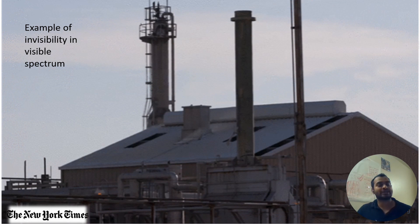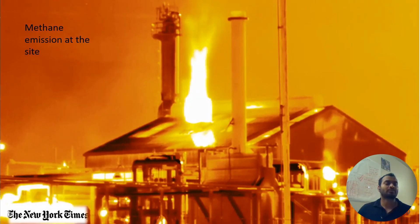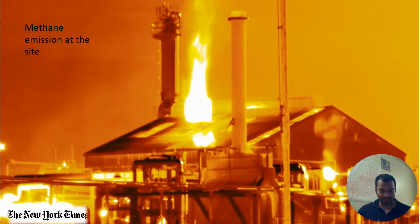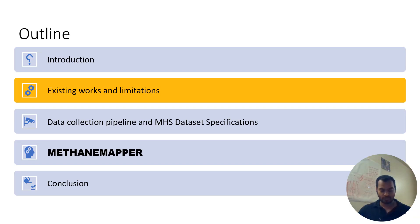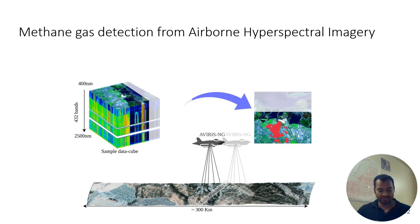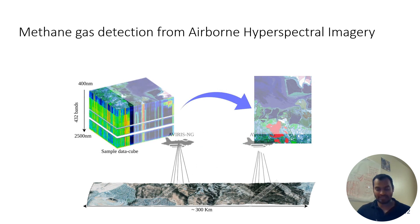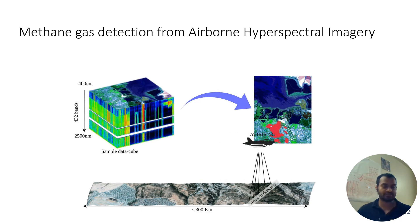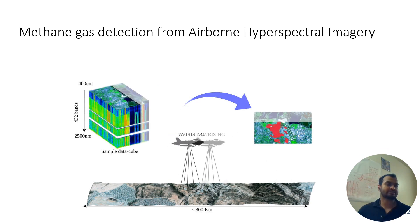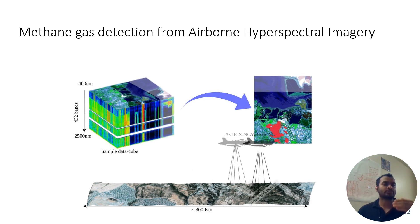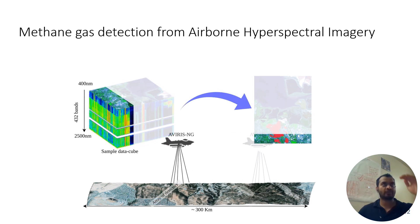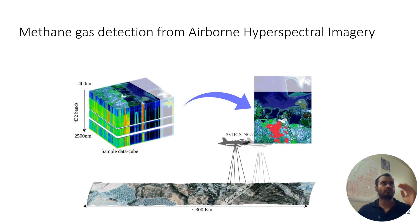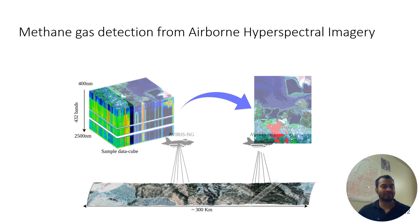This image was published in the New York Times two years ago. Everything seems super normal in the visible domain. But at the moment you look slightly beyond the visible spectrum, you see a large amount of emissions from that chimney. To identify such emission sources, NASA JPL flew an airplane with a hyperspectral sensor and captures images as shown with a sample data cube. By hyperspectral image I mean, instead of RGB images with three channels, in hyperspectral we have 432 channels, ranging from 400 nanometers to 3500 nanometers.